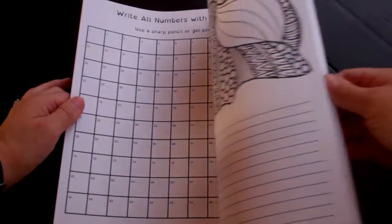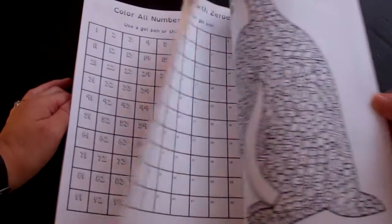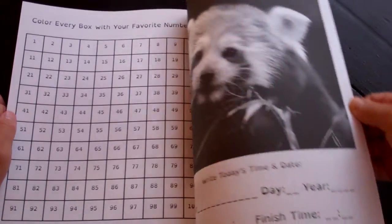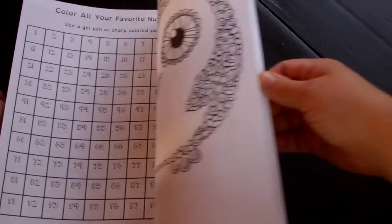Wave break photo. Zeros. Color every box with your favorite numbers. Still doing that time thing and date thing.